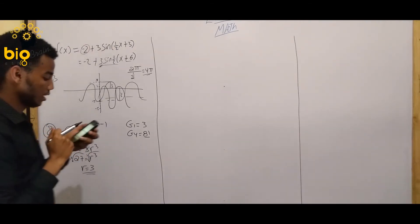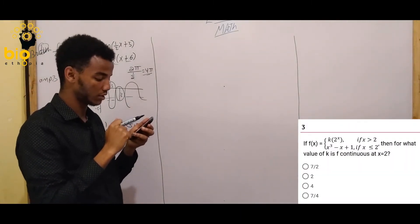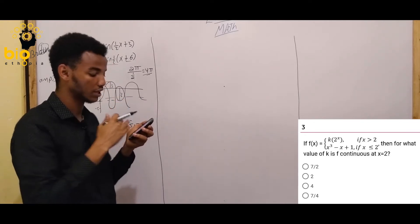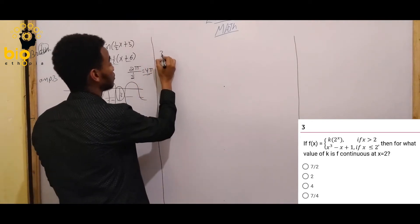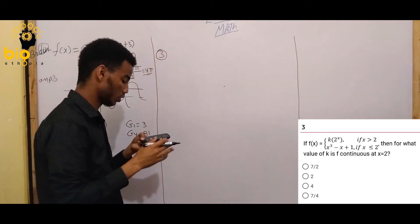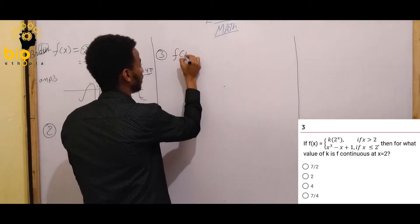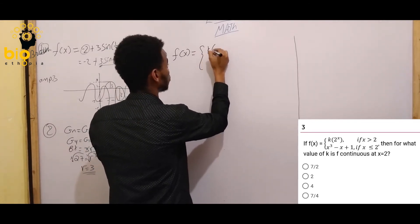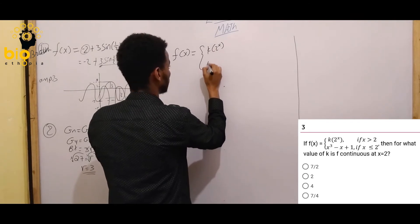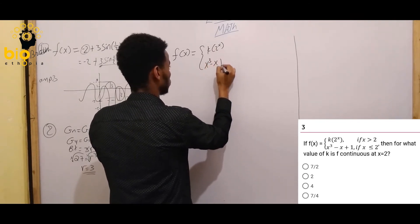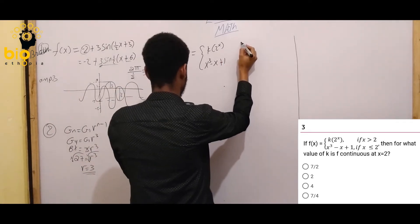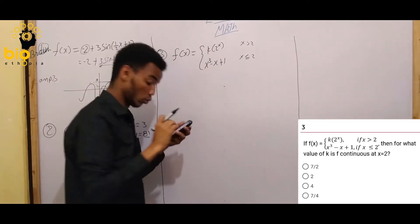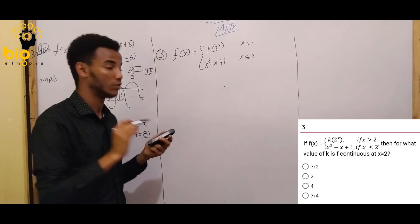If f of x is equal to k times 2 to the power of x — given a piecewise function — what is the value of k if it is continuous at x equals 2? f of x is defined as k times 2 to the power of x for x greater than 2, and x cubed minus x plus 1 for x less than or equal to 2.